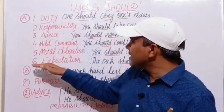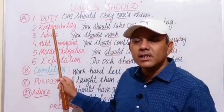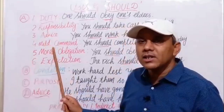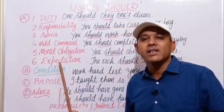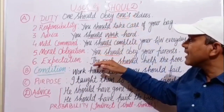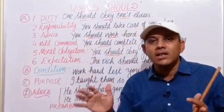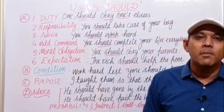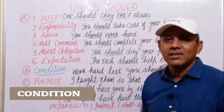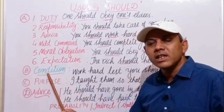So that is one group of sentences in which should is used for duty, responsibility, advice, mild command, moral obligation, and expectation. You have to write at least two sentences of each category to have a good command over the use of should as a modal verb. The next important use is condition.